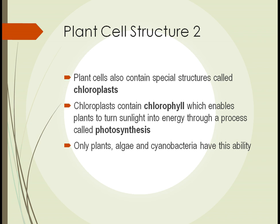Plant cells also contain special structures called chloroplasts — this is really the structure containing the remarkable trick that plants can do. Chloroplasts contain chlorophyll, a substance that allows plants to turn sunlight into usable plant energy through a process called photosynthesis. Only plants, algae, and cyanobacteria have this ability to convert sunlight into energy.